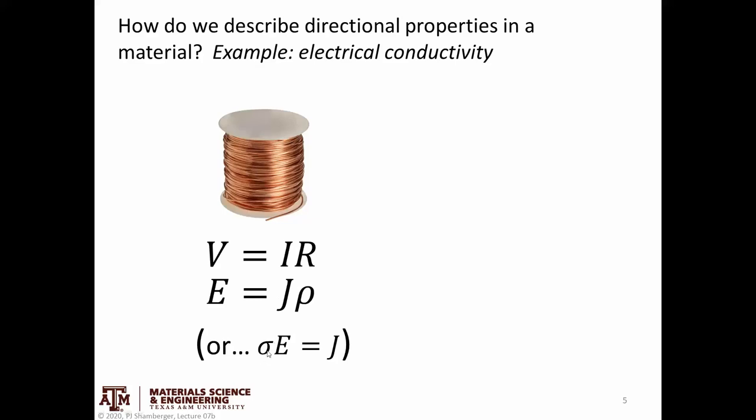Alternatively, I could have written this around where I'm thinking about a conductivity. Conductivity is 1 over resistivity. So if we bring resistivity to the other side, we get conductivity times electric field equals the current density.